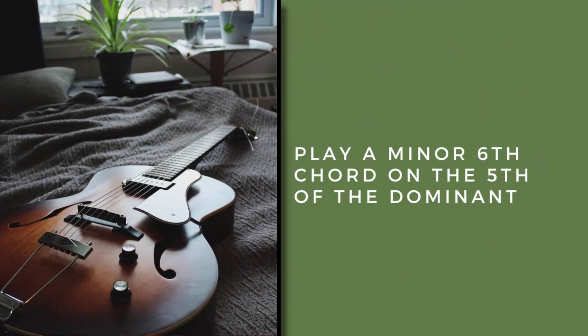In Jazz Guitar Part 20, we introduced the idea of playing a minor 6th chord on the 5th of the dominant. In other words, if the band was playing F7th, we could play C minor 6th. If the band was playing B flat 7th, we could play F minor 6th. If this is a new concept for you, you might want to check out Jazz Guitar Chord Melody Part 20.